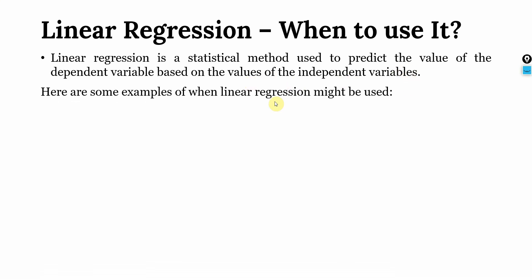Here are some examples when linear regression might be utilized. We want to predict the price of a house based on its size, number of bedrooms and location. So we can predict the price based on these three predictors using linear regression.